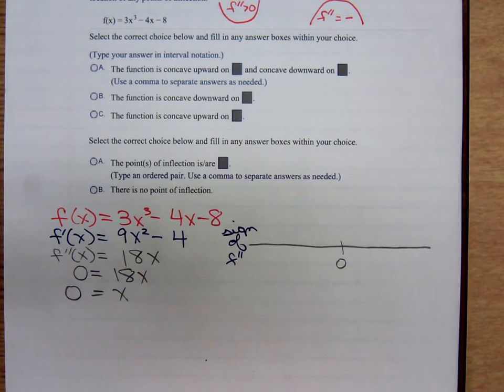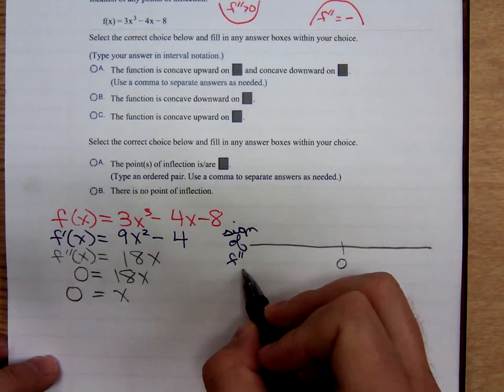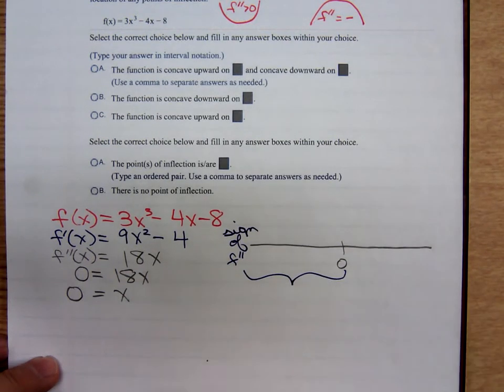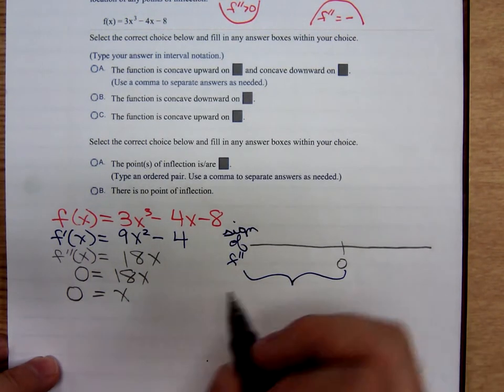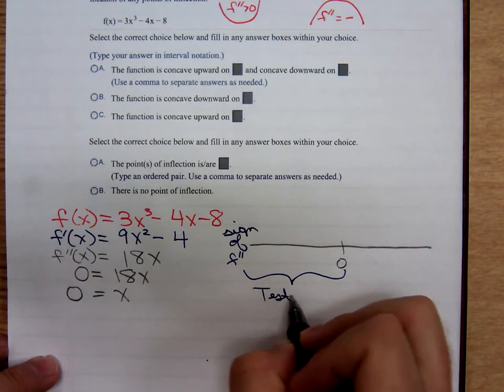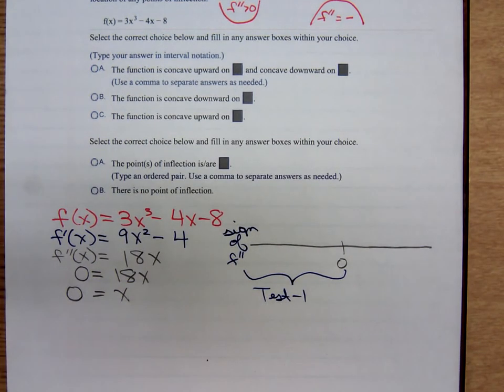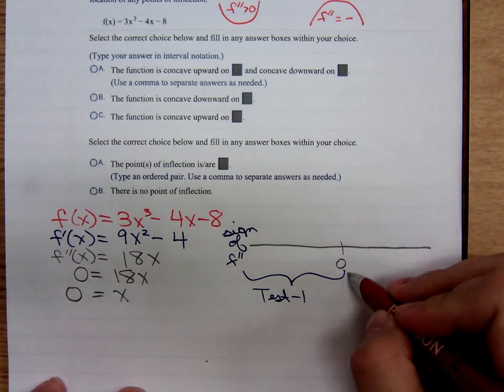We'll choose a number to the left of 0, we'll test negative 1. And to the right of 0, we'll test maybe a positive 1. Something easy to plug in.